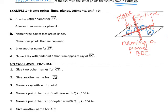Let's take a look at part A: give two other names for line EF. This is a line because it has the symbol over top of it. Looking at the diagram, here's F and here's E — we're talking about this line right here. We can reverse the two letters and call it line FE. That's one name for that same line. We can also call it by its lowercase letter, which is just line M.